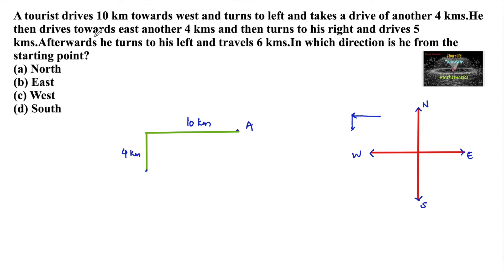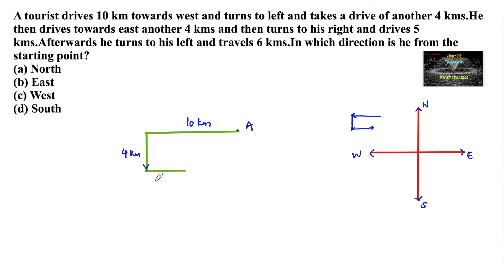He then drives towards east. When he was moving south and takes a left turn, he will move towards the east direction. So he travels 4 km towards the east direction.